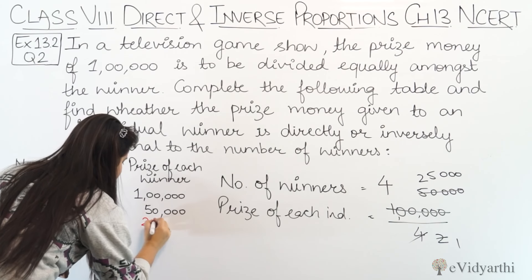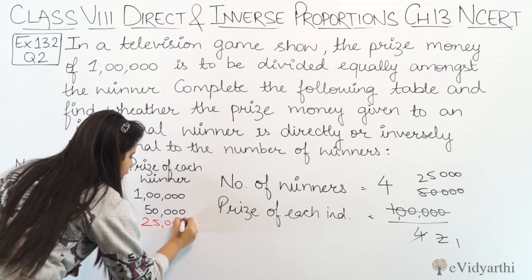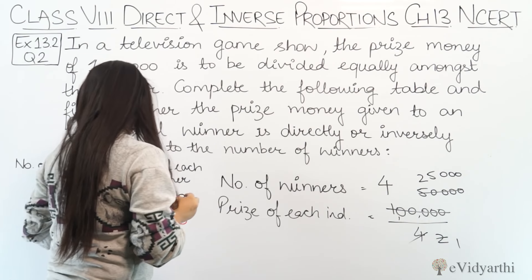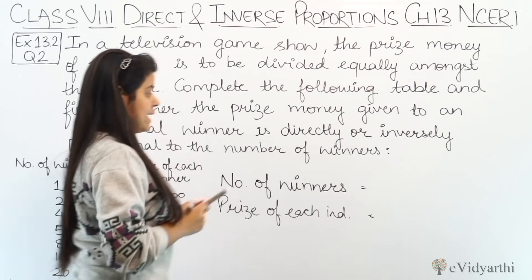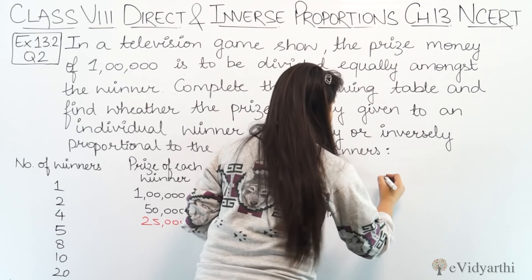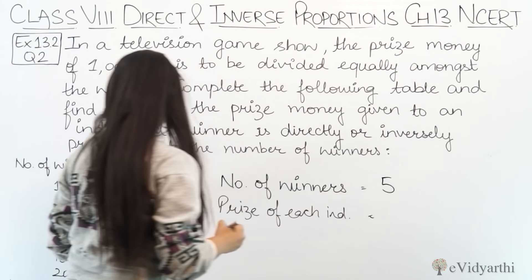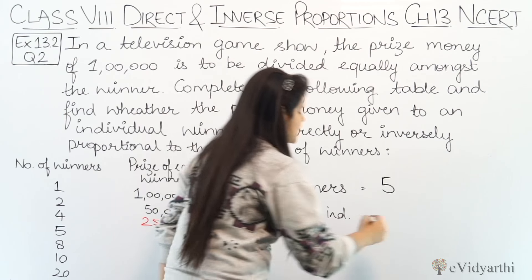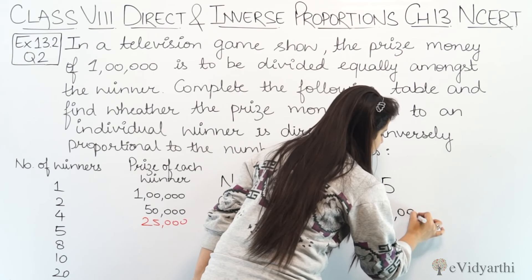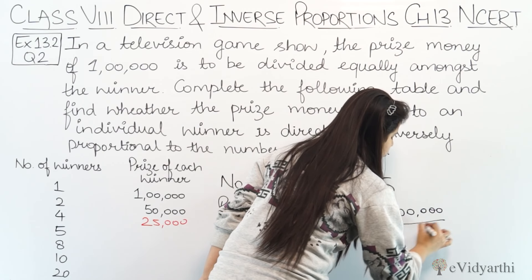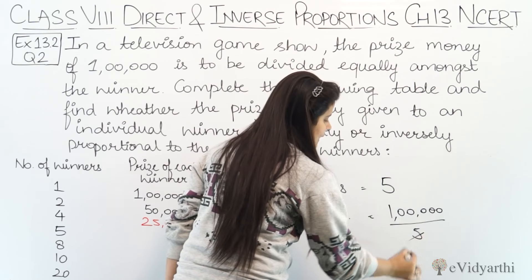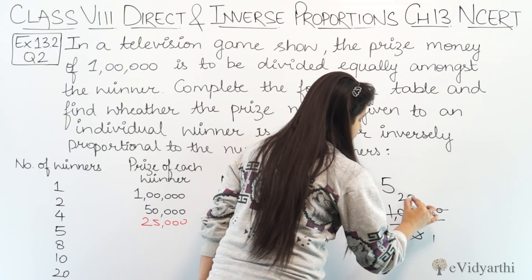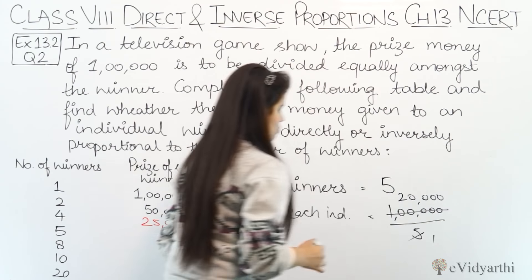Ab next pe aate hain. Ab next hmare paas hai number of winners 5. Agar 5 winners hain, to prize money each individual ko kitni milegi? Again, 1 lakh ko aap divide karoge 5 se — ye aa gaya 20,000.